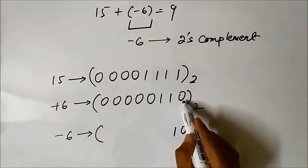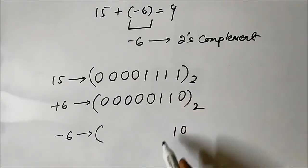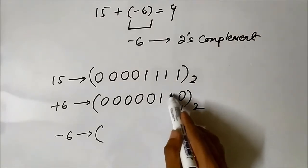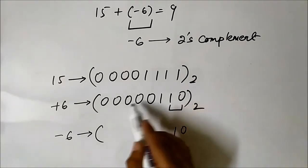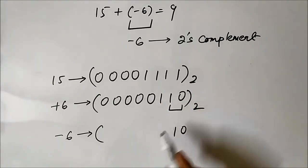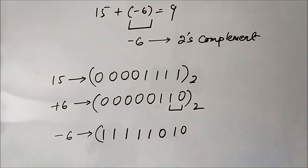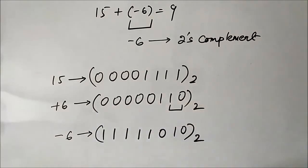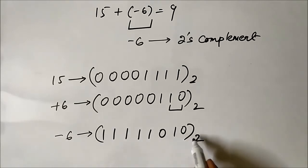In 2s complement, we copy the bits starting from the LSB side until we reach the first 1 bit, then we take the 1s complement of the remaining bits. Applying this process gives us 1 1 1 1 1 0 1 0. This is the representation of minus 6 in 2s complement form.